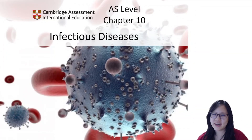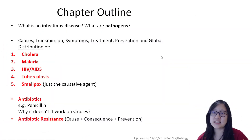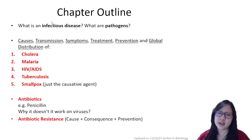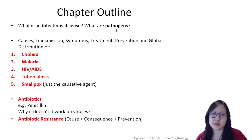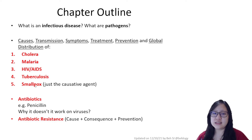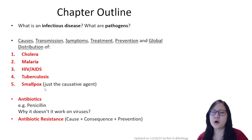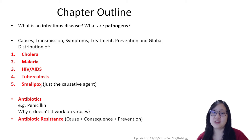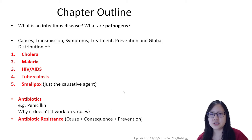Hi everyone and welcome to chapter 10: infectious diseases. In this chapter we'll first be defining what infectious disease means, what pathogens are, and the different types of pathogens. After that we're going to learn about five different diseases — specifically cholera, malaria, HIV-AIDS, tuberculosis, and smallpox, which will be an important example when it comes to vaccination in the next chapter. Last but not least, we'll be covering antibiotics and antibiotic resistance at the end of this chapter.